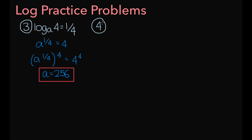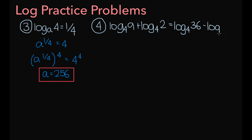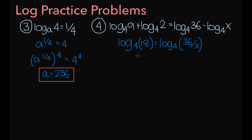For the fourth problem, we have the equation log base 4 of 9 plus log base 4 of 2 equals the log base 4 of 36 minus the log base 4 of x. Applying the product rule on the left gives log base 4 of 9 times 2, which is 18. Applying the quotient rule on the right gives log base 4 of 36 over x. For both sides to be equal, 18 must equal 36 over x. Multiplying by x gives 18x equals 36, so x equals 2.